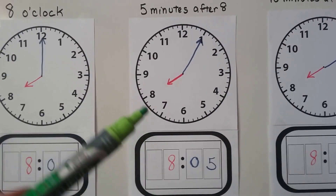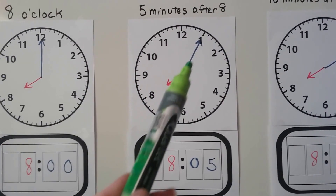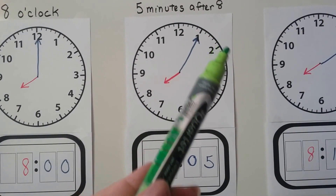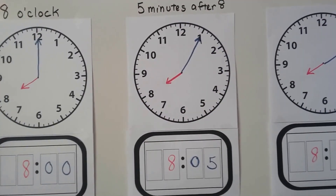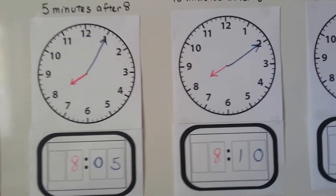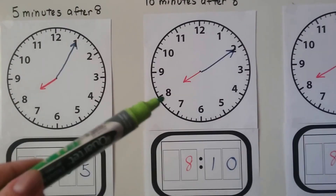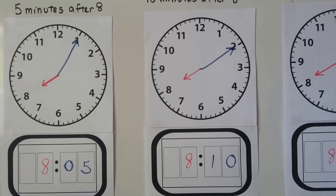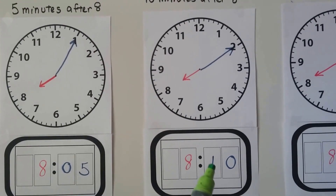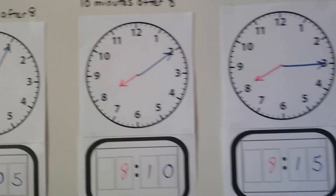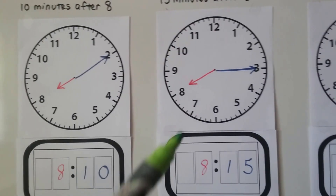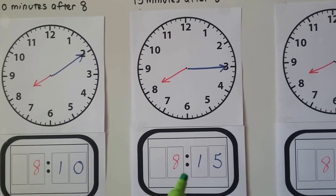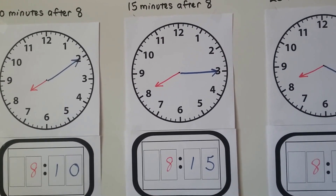On a digital clock for 8:05, the hour hand points to the eight and the minute hand points to the one — because that's five minutes. For ten minutes after eight, the minute hand points to the two; that's 8:10 on a digital clock — an eight, a one, and a zero. For fifteen minutes after eight, the minute hand points on the three: five, ten, fifteen. It's written as an eight, a colon, a one, and a five on a digital clock.